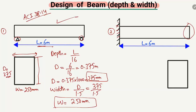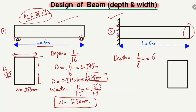Now for the cantilever beam — the second one — the ACI, American Concrete Institute, states a different formula. You can find the depth of the beam equal to L divided by 8, where L is again the length of the beam.